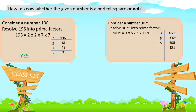121 is not divisible by 5 or 7, but it is divisible by 11. 11 × 11 = 121. So the factors of 9075 are 3 × 5 × 5 × 11 × 11. Here we have two 5s and two 11s, but the factor 3 is a single, unpaired factor.